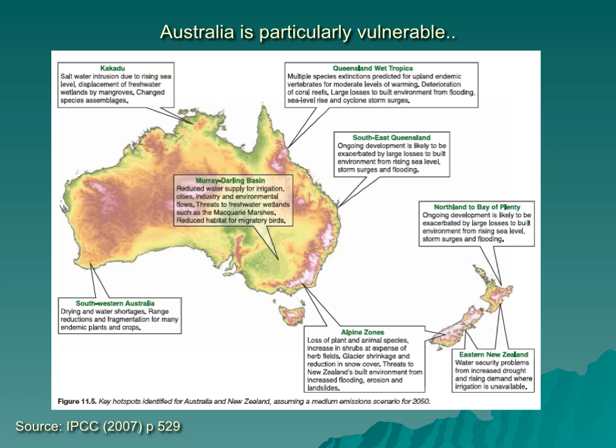Australia is particularly vulnerable to climate change impacts. It's already the driest continent on Earth, excluding Antarctica, where it's too cold for precipitation. CSIRO and the Met Bureau have examined potential impacts of global warming on climate regimes in Australia. Changes include lower rainfall in the south and higher in the north, changes to the barrier reef, increased desertification in some areas. Many of these changes will impact on agriculture as well as on natural ecosystems and vegetation patterns. While Australia has experienced major changes in the past, the issue is the rate of change and the ability of species to adapt.